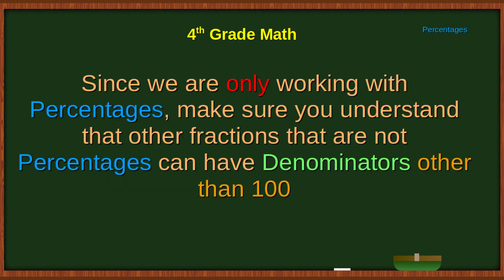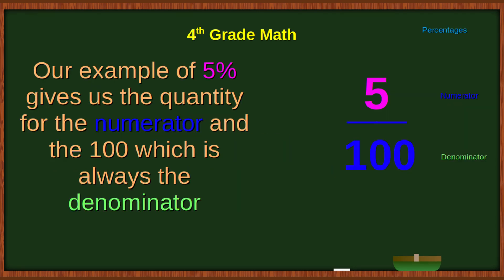Since we are only working with percentages, make sure you understand that other fractions that are not percentages can have denominators other than 100. Our example of 5% gives us the quantity for the numerator and the 100, which is always the denominator.